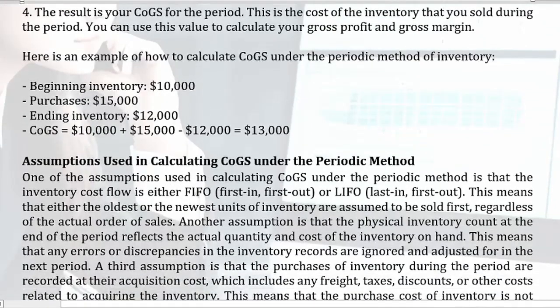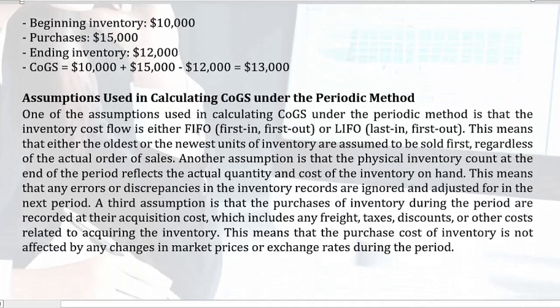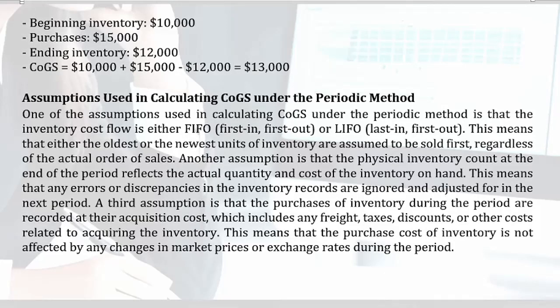Here is an example of how to calculate COGS under the periodic method of inventory: Beginning inventory = $10,000; Purchases = $15,000; Ending inventory = $12,000. COGS = $10,000 + $15,000 − $12,000 = $13,000.